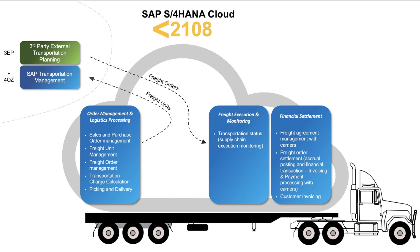The topic of transportation management is not something that is foreign to SAP S4HANA Cloud. As you can see in the diagram, before 2108 there were some transportation management capabilities in the system, especially in the area of recording order-based transportation requirements coming in from sales orders or purchase orders, as well as the ability to perform in-system freight execution event updates, monitoring, and financial settlements with your carriers — meaning that charge calculation in the system was already available.